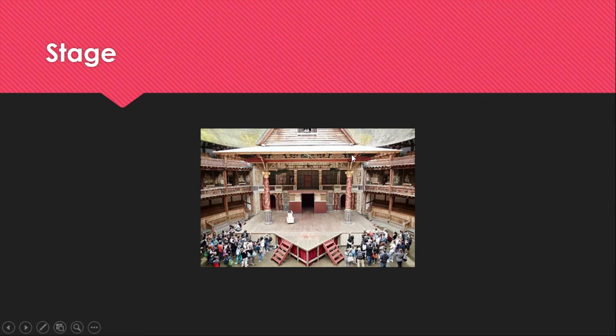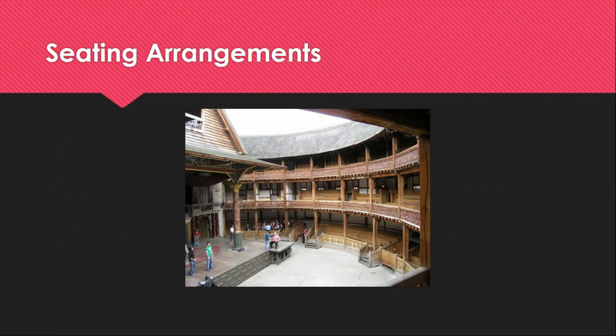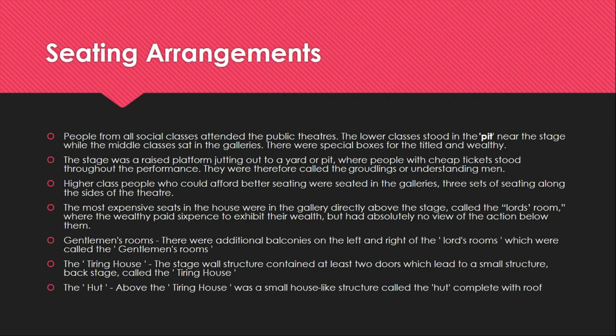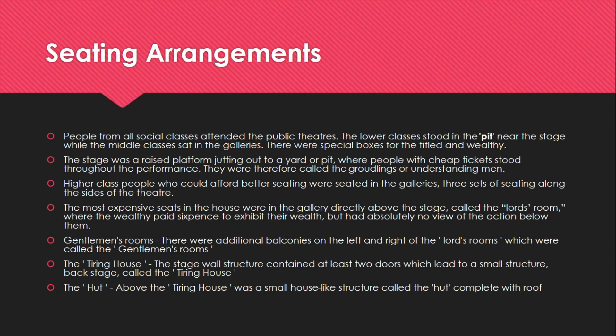Another structure is the hut — the hut is above the tiring house. This particular roof building was called the hut; it was a small house-like structure, complete with a roof. This is all about the seating arrangements of Elizabethan theater.